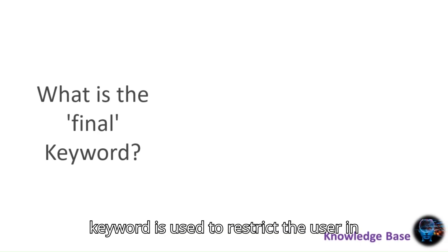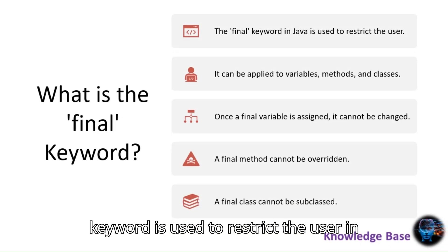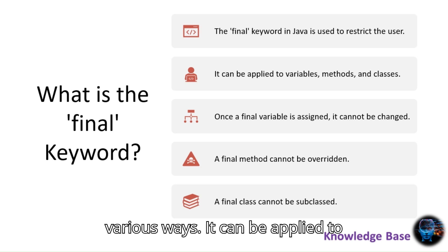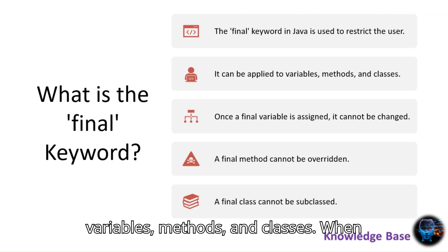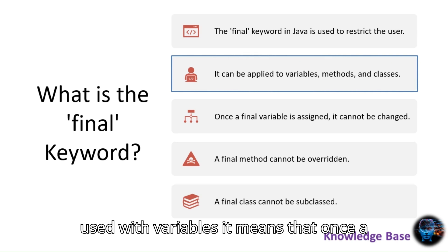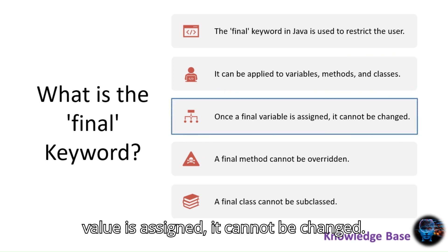The final keyword is used to restrict the user in various ways. It can be applied to variables, methods, and classes. When used with variables, it means that once a value is assigned, it cannot be changed.